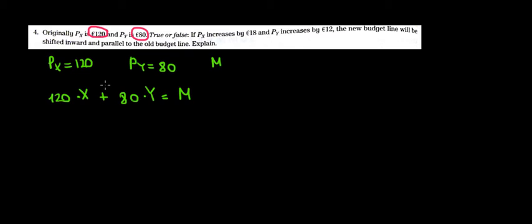So let's keep Y on this side and let's take 120X on the other side. Let's take it over there. So we would have 80Y equals M minus 120X.